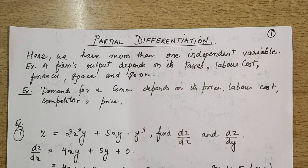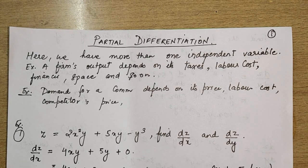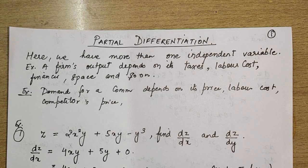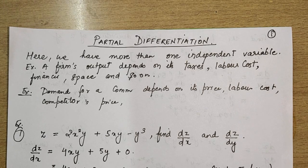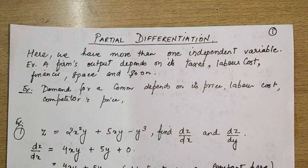So we have many variables. The output is a dependent variable and it depends on taxes, labor cost, finances, space, and other things. Similarly, demand for a commodity depends on its price, labor cost, and competitors' price. Demand is the dependent variable, and price, labor cost, and competitors' price are the independent variables. Let us move on with an example.